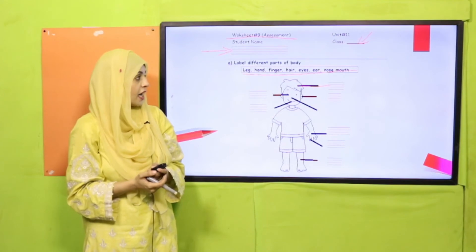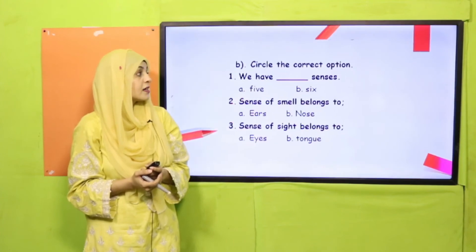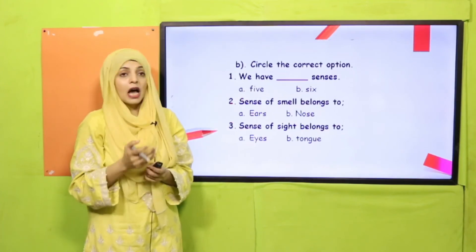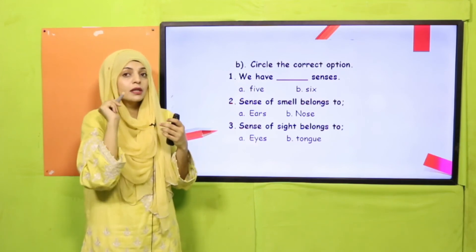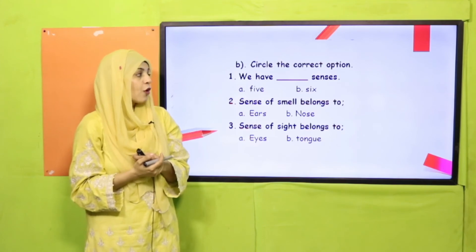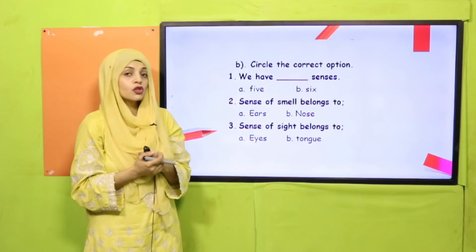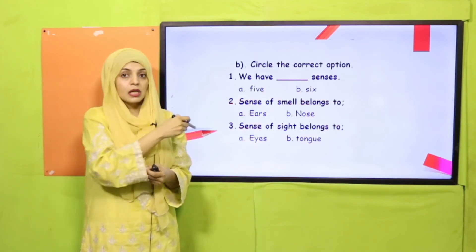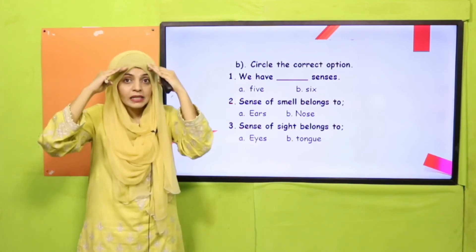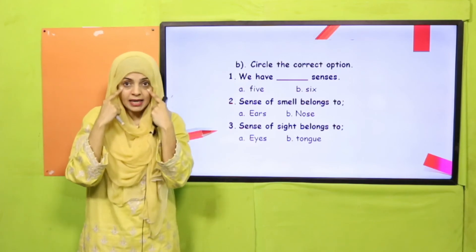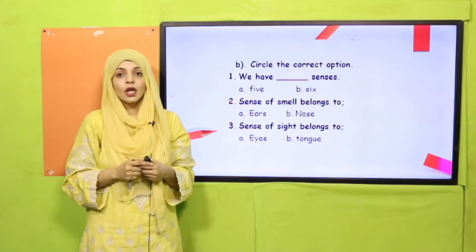I hope you have finished it — your teacher will recheck it. Now circle the correct option. Three sentences are given, each with two options underneath. We have five or six senses — circle the correct one. Sense of smell belongs to ears or nose — circle the correct option. Sense of sight belongs to eyes or tongue — circle the correct option.